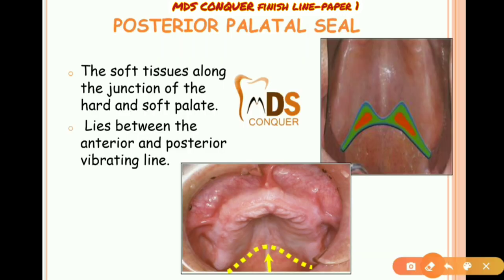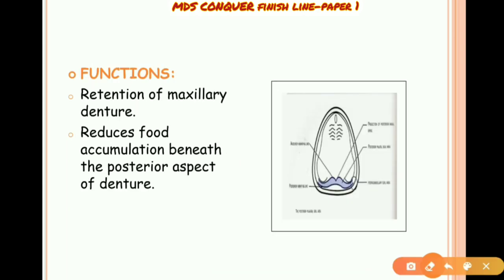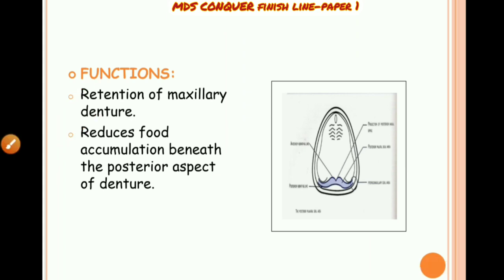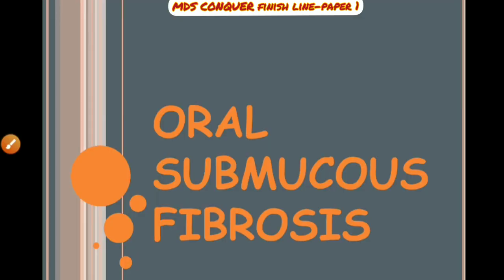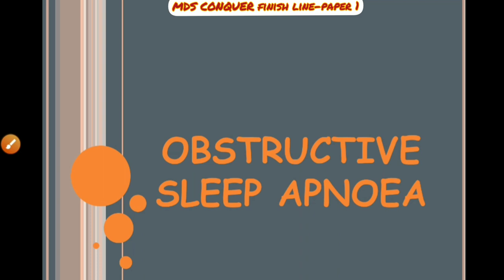Posterior palatal seal is very important in prosthodontics during impression making. Its function is to retain the maxillary denture and reduce accumulation of food behind the denture. Oral submucous fibrosis involves the muscles of the palate and can be mentioned as an applied aspect. Obstructive sleep apnea is due to elongated soft palate tissues, edema of the soft palate, and tonsillar hypertrophy.